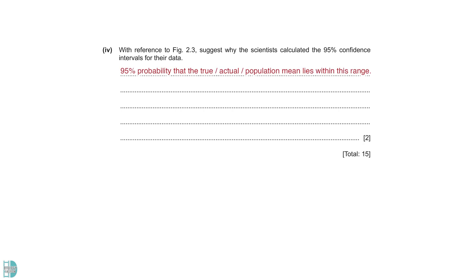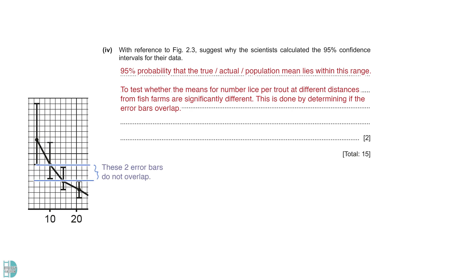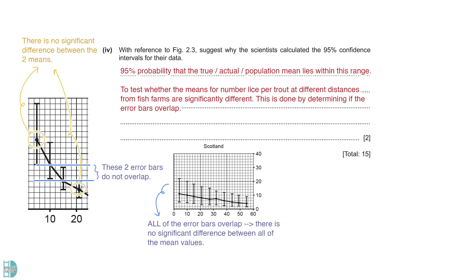Besides, by checking the overlapping of the error bars, we can determine if the difference between two mean values is significant. For example, for Ireland, the error bars for 5 and 21 kilometers do not overlap. There is a significant difference between the two means. For Scotland, all the error bars overlap. This means that there is no significant difference between all of the mean values.